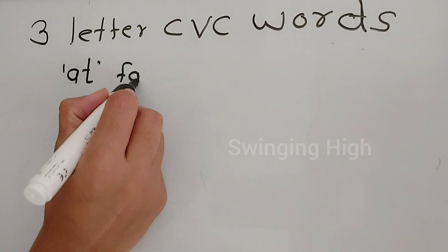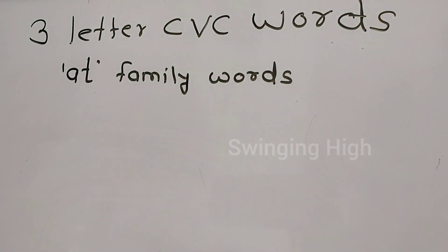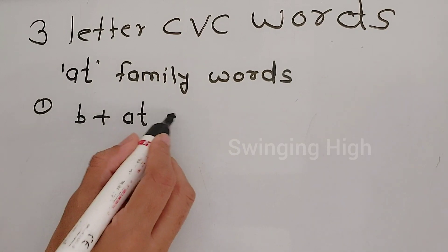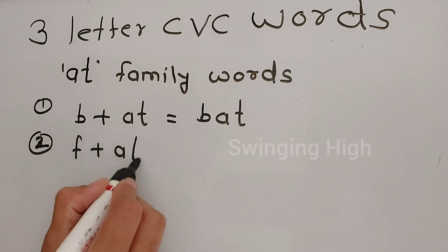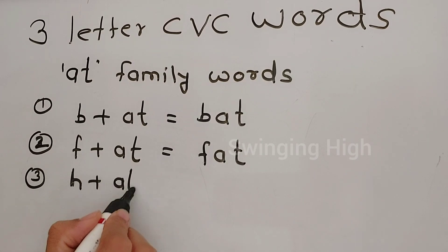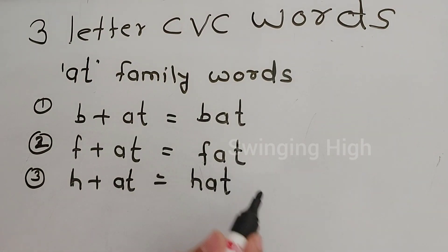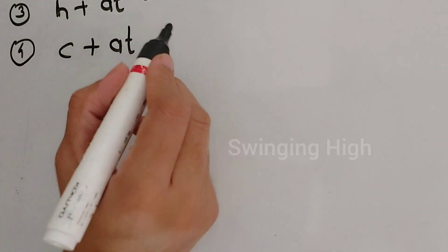Next at family words. Let's see which words are belongs to this family. B-at, bat. F-at, fat. H-at, hat. K-at, cat.